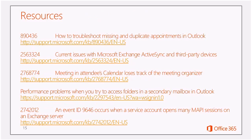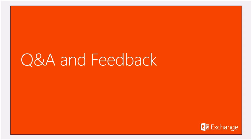Performance problems when you try to access folders in a secondary mailbox in Outlook deal with the 9646 type — the 500 folder limit or the 32-session limit. An event 9646 occurs when a service account opens many MAPI sessions on an Exchange server, so it doesn't necessarily have to be network issues. Thank you very much for your time today, and I hope you have a great day. Thanks again. Goodbye.